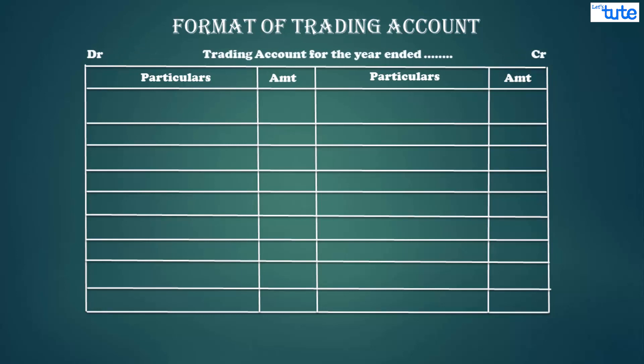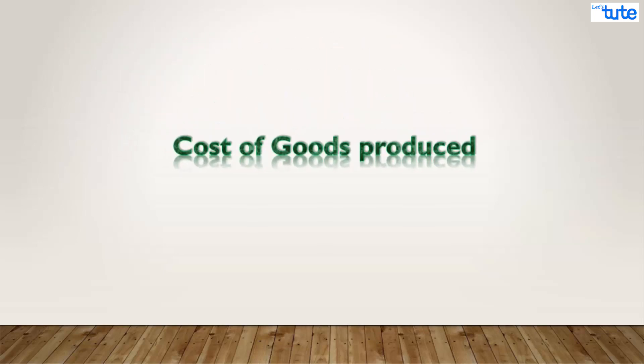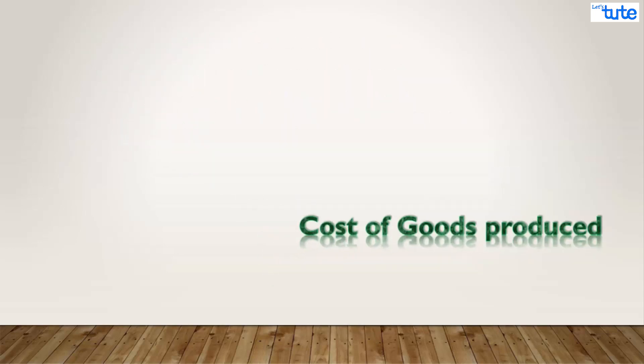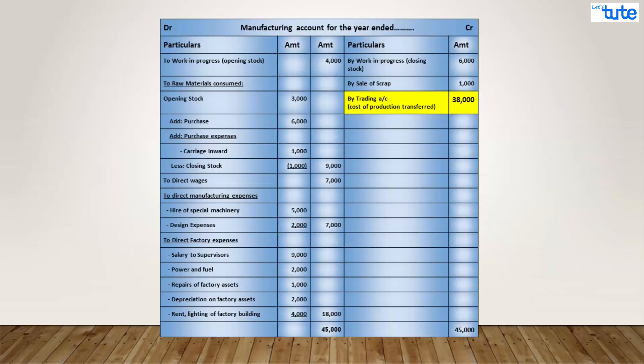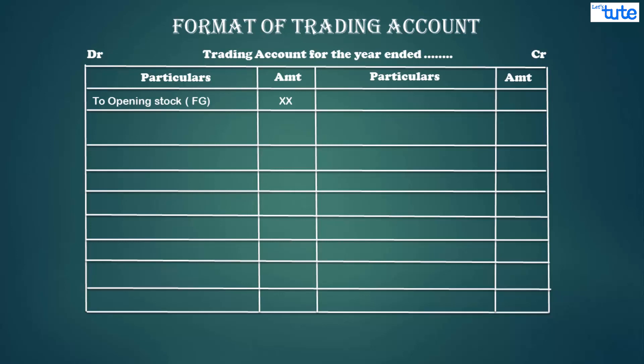Let's begin with drawing the format. The first item on the debit side of the trading account is opening stock of finished goods. Next is the cost of goods produced as per the manufacturing account. The cost of production is recorded on the credit side of the manufacturing account and is then transferred to the debit side of the trading account.